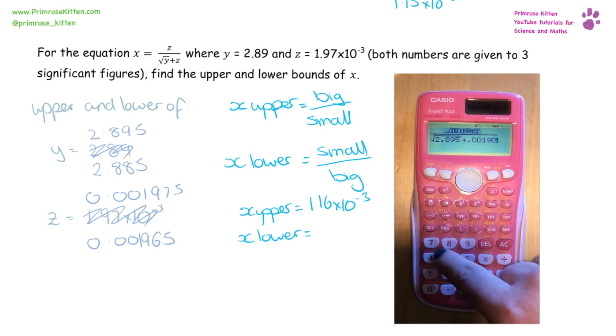Now moving on to the lower bounds, you can see we're putting small numbers on top, big numbers on the bottom, 1.15 times 10 to the minus three.